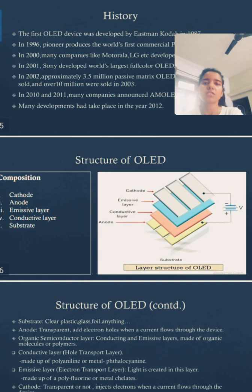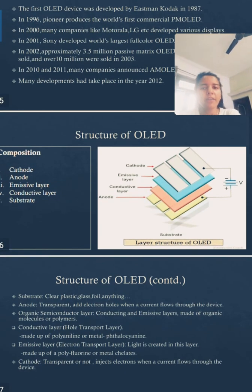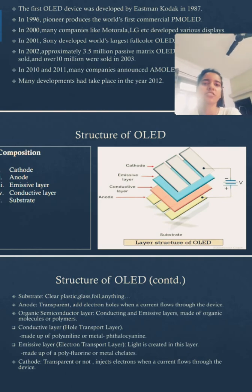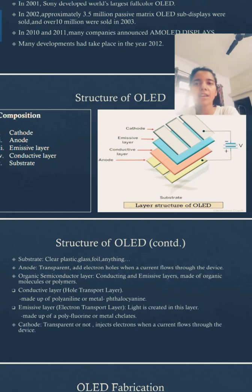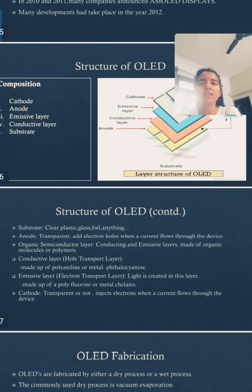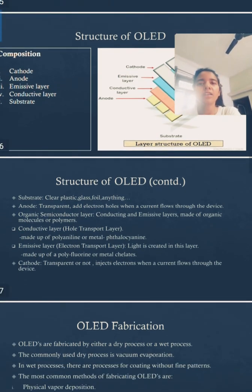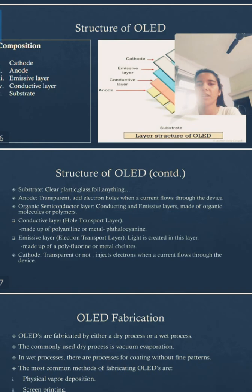Moving to the next slide: Structure of OLEDs. Have a look at the figure, which shows the layer structure of an OLED. The composition of an OLED consists of: cathode, anode, emissive layer, conductive layer, and substrate.